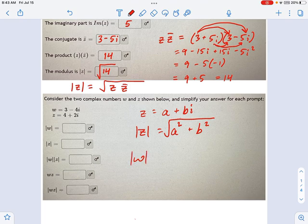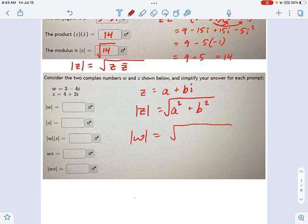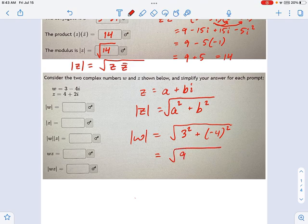Let's say I want to know the modulus of w. Well, that is the square root of, in this example, see what a and b are? They're 3 and 4. So this becomes 3 squared plus negative 4 squared, which you might remember from triangles. This is a common Pythagorean triple. It's what we call it. This becomes the square root of 25, which is 5. So we've got a modulus of 5 for w.